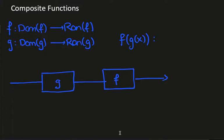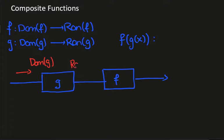In this video we look at composite functions. Say we have a function f which takes its domain to its range and another function g which takes its domain to its range. We want to look at the composite f of g. The picture is that we first input through g — we input the domain of g and output the range of g — and that then has to fit into the domain of f.